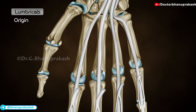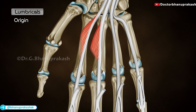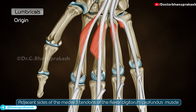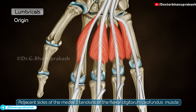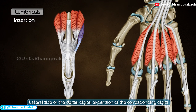Origin: First and second lumbricals originate from the lateral side of the lateral two tendons of the flexor digitorum profundus muscle. Third and fourth lumbricals arise from adjacent sides of the medial three tendons of the flexor digitorum profundus muscle. Insertion is at the lateral side of the dorsal digital expansion of the corresponding digits.